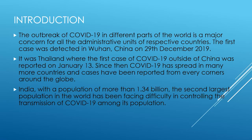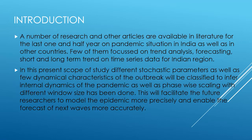The outbreak of COVID-19 occurred in different parts of the world and it is a major concern for all administrative units of respective countries. India, with a population of more than 1.34 billion — the second largest population in the world — has been facing difficulties in controlling the transmission of COVID-19. In this scope of study, I have presented stochastic parameters as well as dynamical characteristics of the outbreak, classified to internal dynamics of the pandemic, and phase-wise scaling with different window sizes has been done.